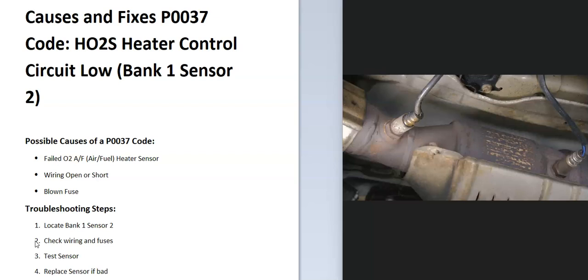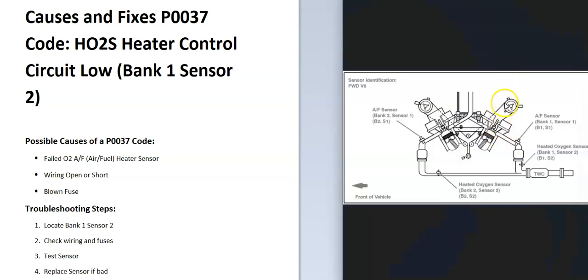In V6 and V8 engines, they have two banks. Bank one is always the side of the engine with the number one cylinder. So if you find the number one cylinder, that'll be bank one, and the opposite is bank two. Sensor two is just the second sensor going down on that side.